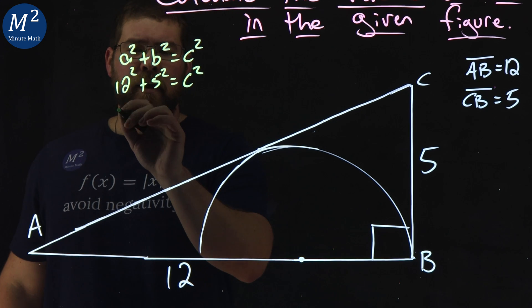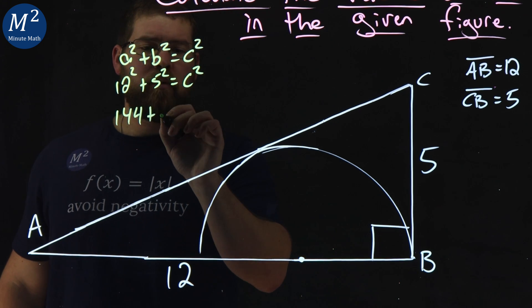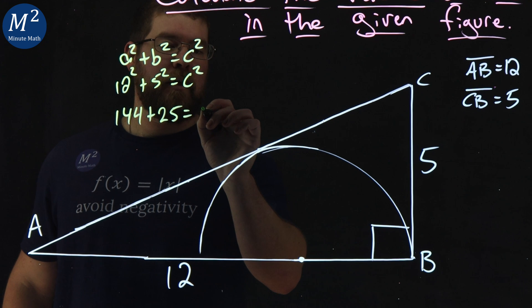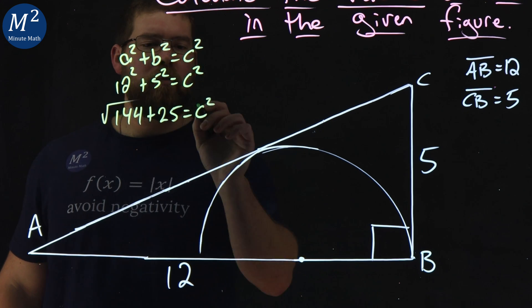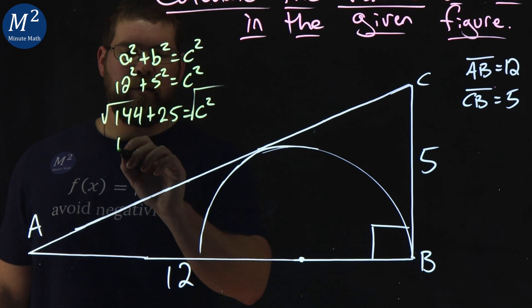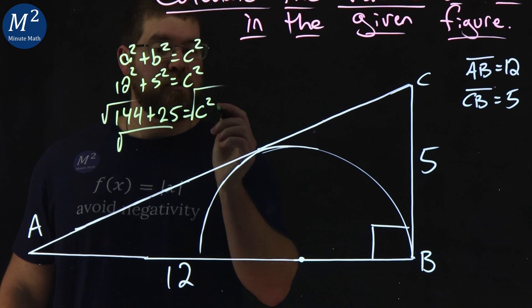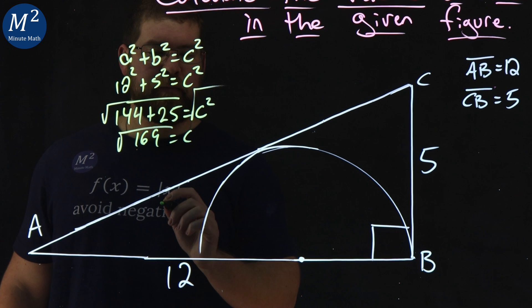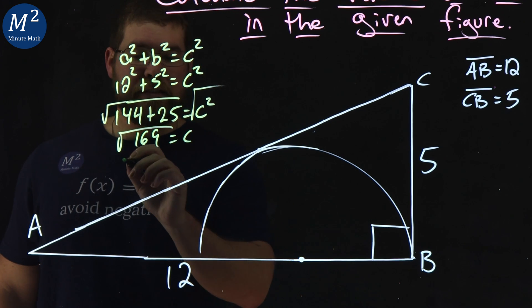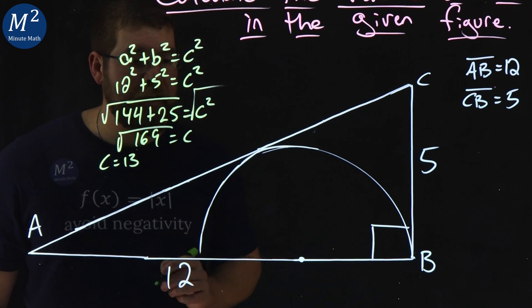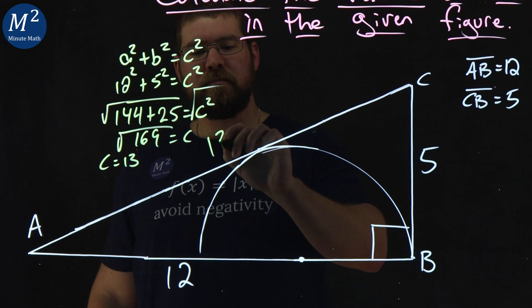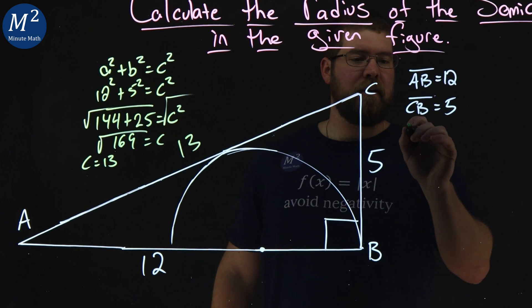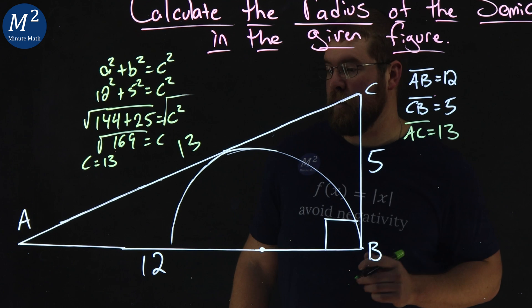12 squared is 144, 5 squared, 25 equals C squared. I'm going to square root both sides and simplify this with a square root of 144 plus 25 is 169, equals C. And the square root of 169 is equal to 13. So, the length of AC is 13, and we have that here. Length of AC equals 13.